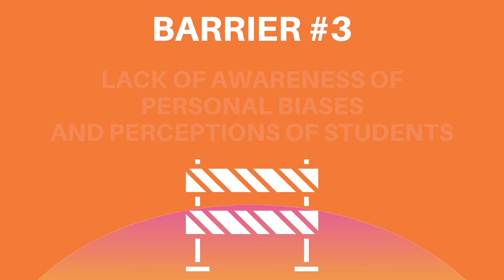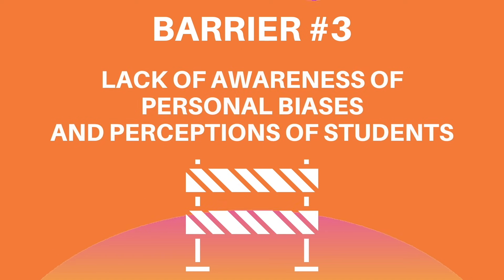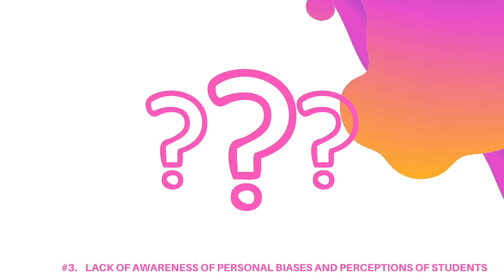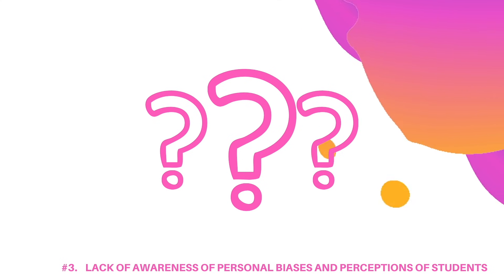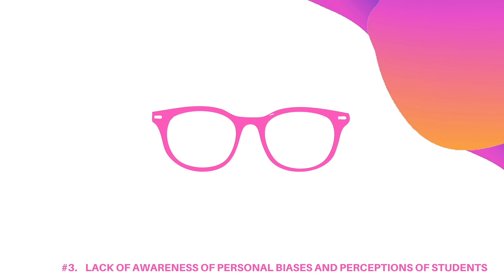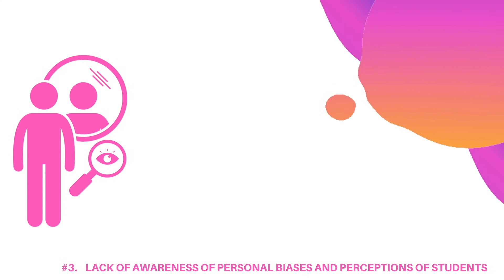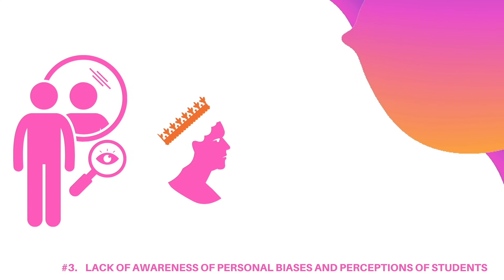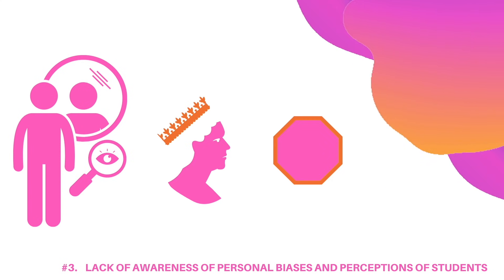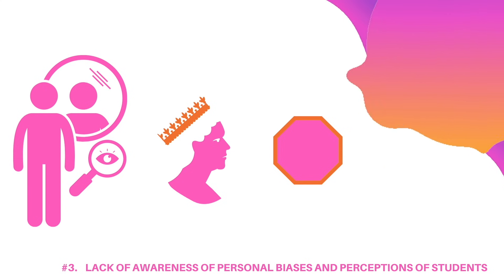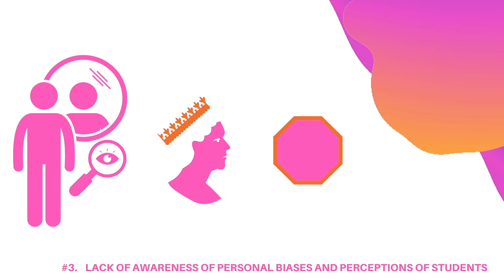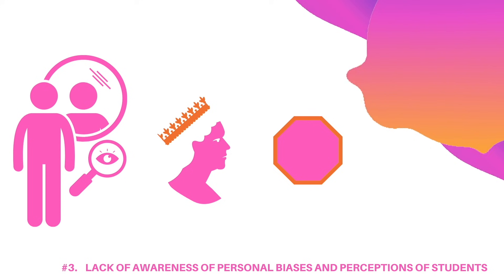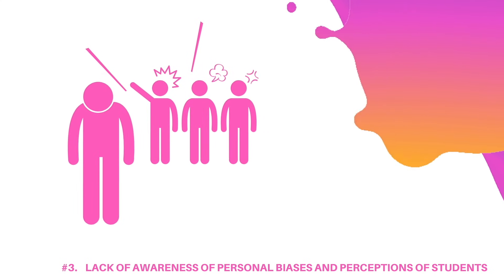Barrier number three: lack of awareness of personal biases and perceptions of students. What does a good student look and act like? Everyone has biases, which is why we need to interrogate our own power and privilege to check them as much as possible. Without doing so, these implicit biases can lead to decisions made about students that are racist, sexist.